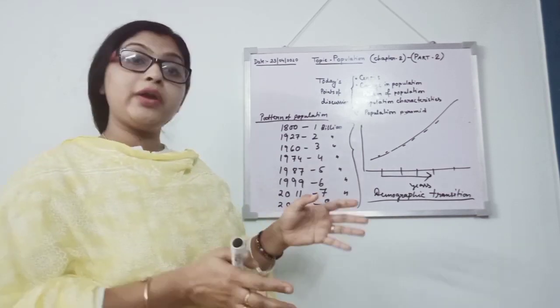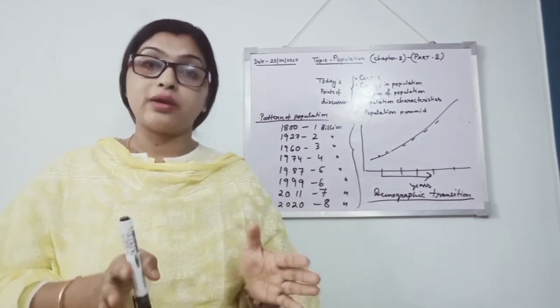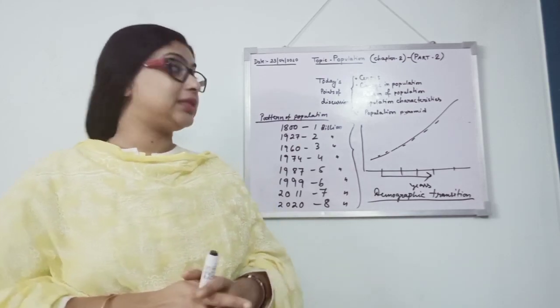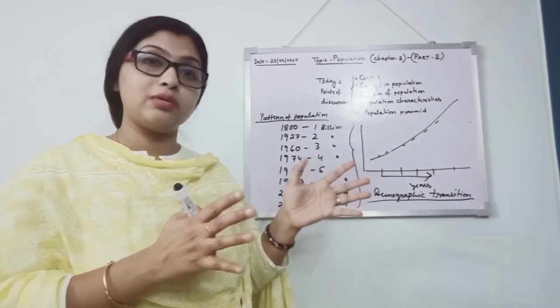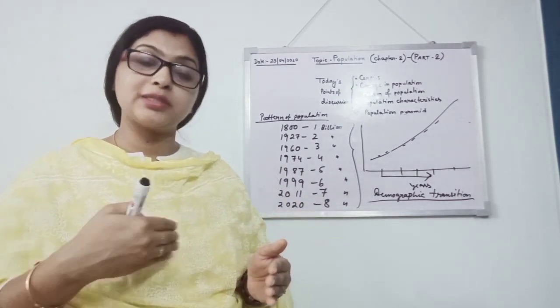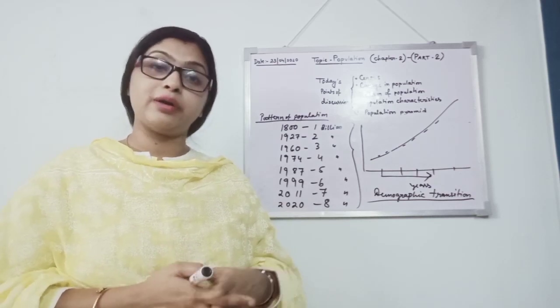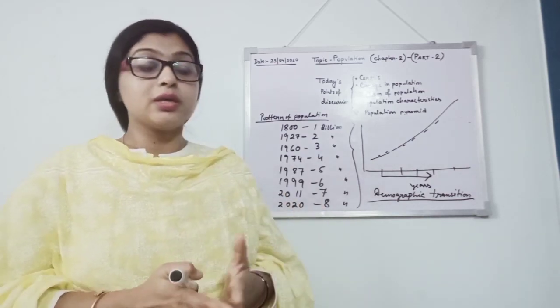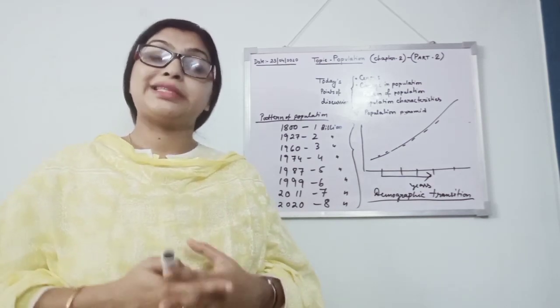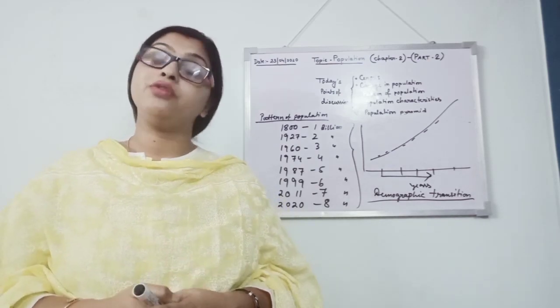And some developed countries like North America, Europe, they are having less birth rate. Due to that, these countries like South Africa, South America, Asian countries are still developing. They are not coming in that category of developed because these countries are not able to provide their necessary or satisfactory resources.